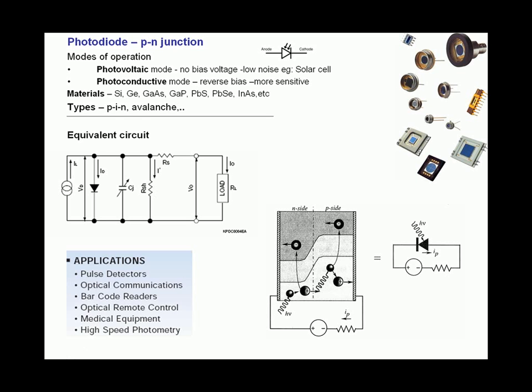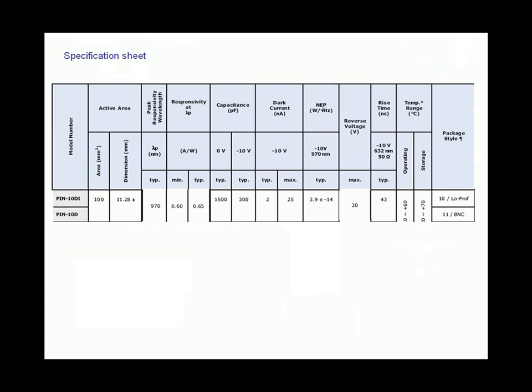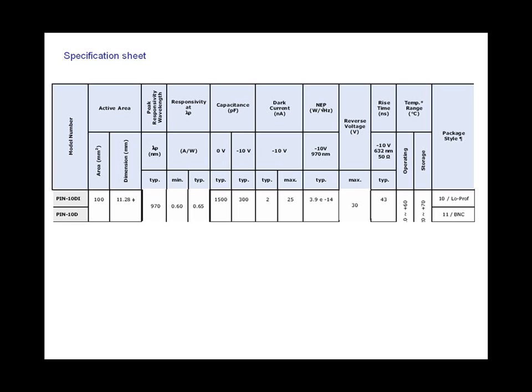Let's take a look at a typical specification sheet of a photodiode that we have in our lab. It's called PIN-10D by United Detector Technologies, and you should be able to judge which photodiode is best for your application by looking and understanding these terms. Some terms you need to be familiar with are the responsivity at lambda p, which is the peak wavelength. In this case, it's around 970 nanometers.